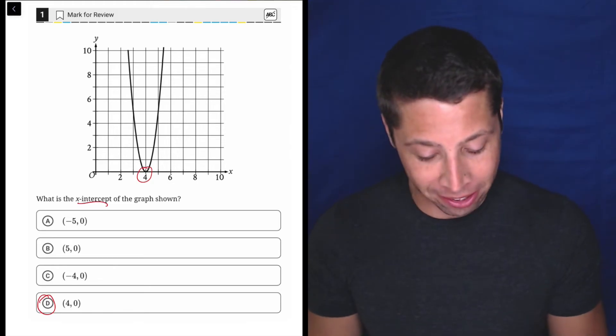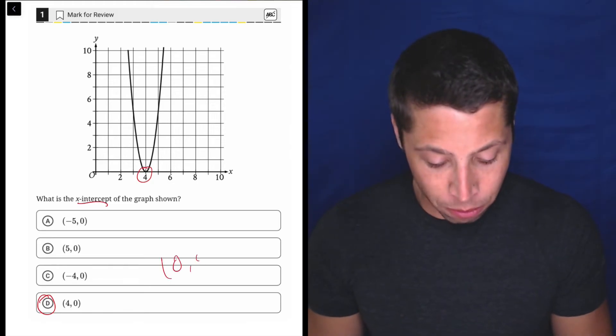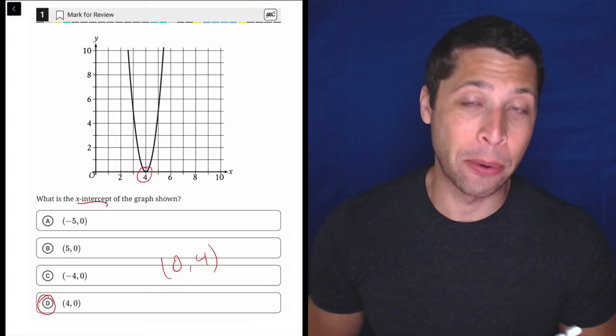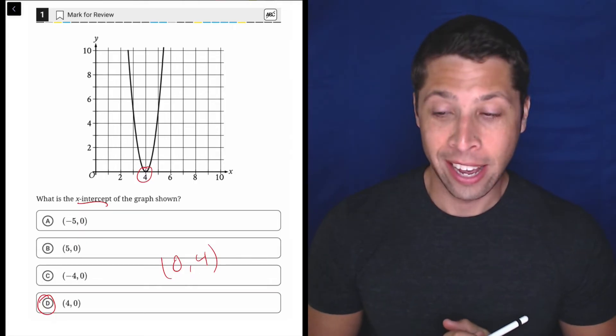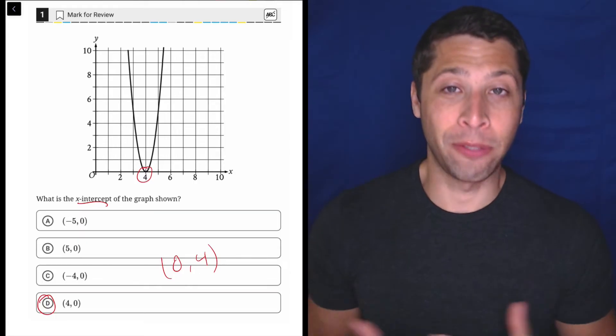Notice that they didn't put the trap answer, 0, 4, which would have made sense for them to put because they like to confuse this between x and y, so make sure that you don't confuse those things.